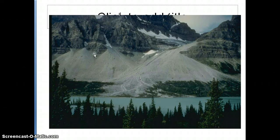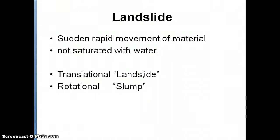There's a great example on figure 10-2 of a talus slope. A landslide, however, is a sudden rapid movement of material. Typically a landslide is not saturated with water. You need to be able to define two different types of landslides: a translational landslide and a rotational slump.